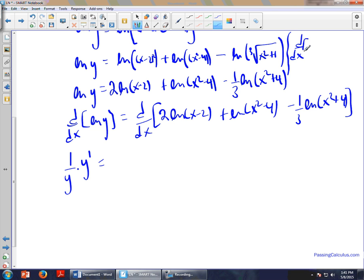Here it is up here: d over dx of ln of u is equal to 1 over u times u prime. This makes this really easy because the derivatives inside of these things are pretty straightforward. The derivative of 2 ln of x minus 2: for whatever reason people just want to use the product rule for this, 2 times ln of x minus 2. You don't need to use the product rule. 2 is just a constant. The derivative of 2, you don't need to worry about it.